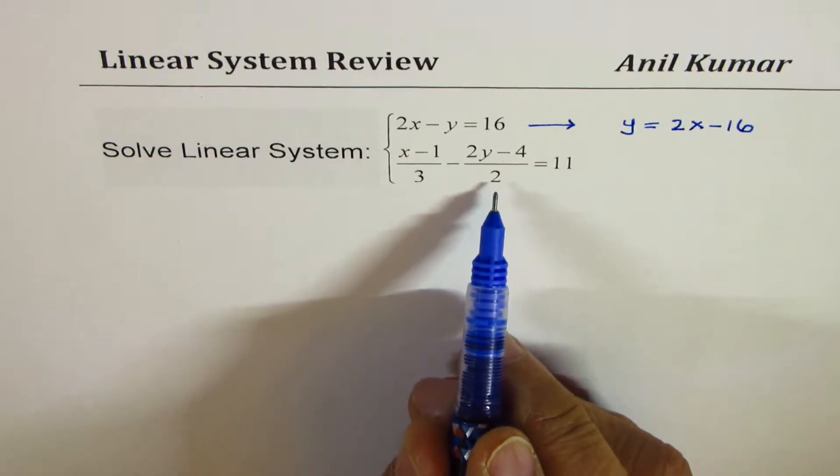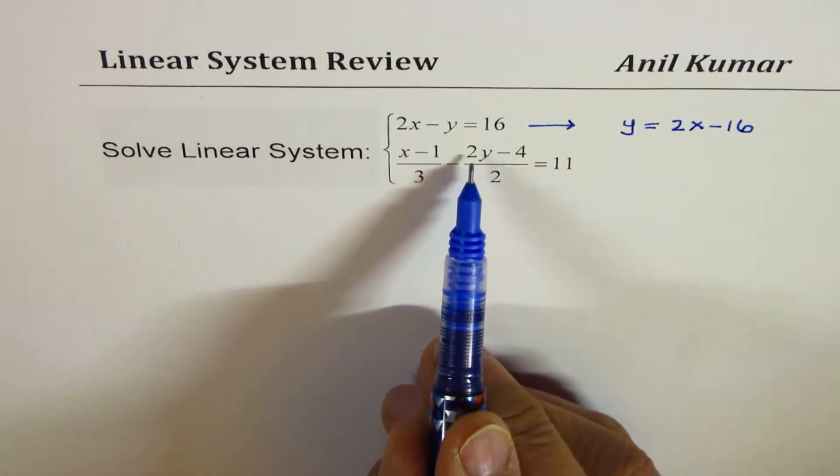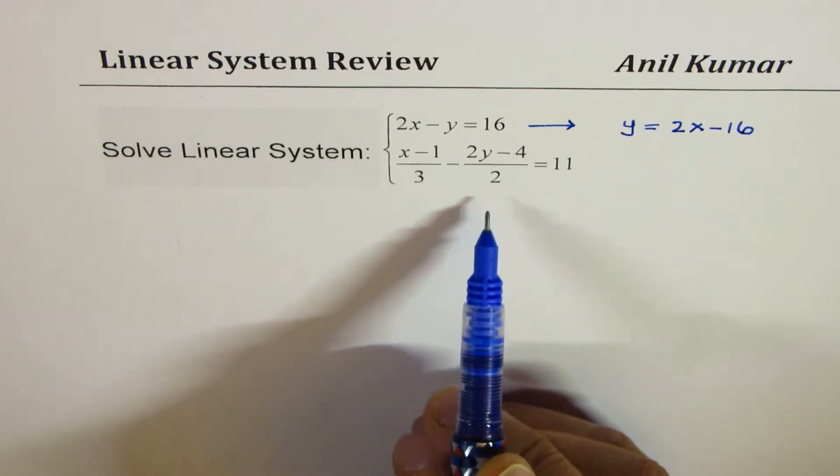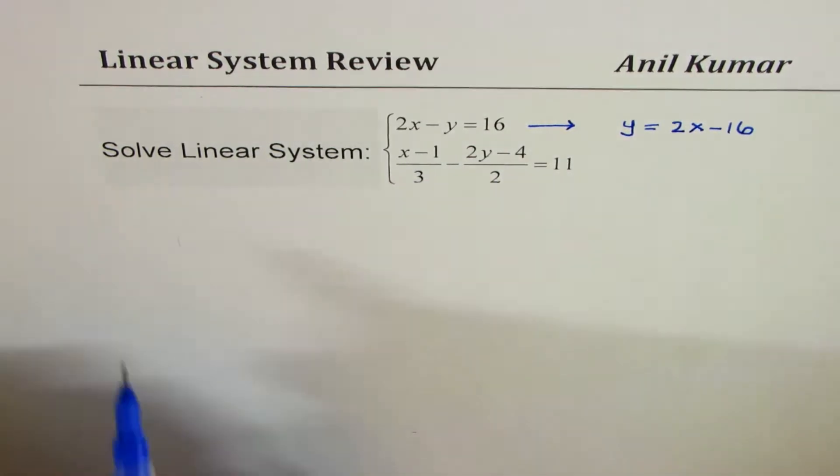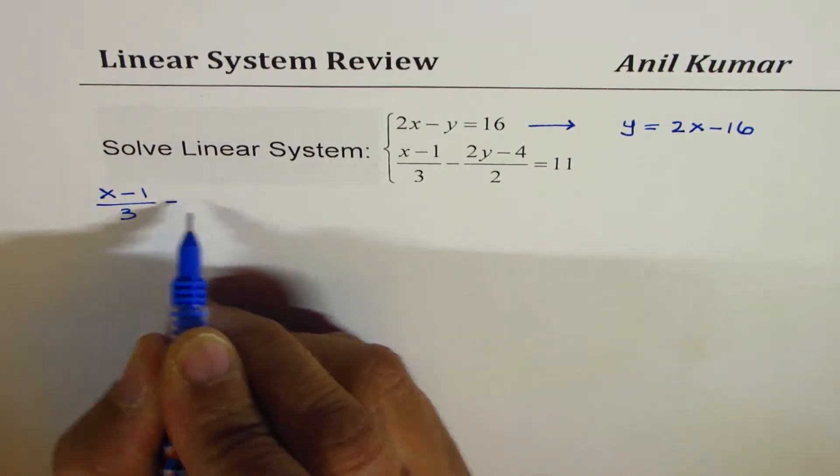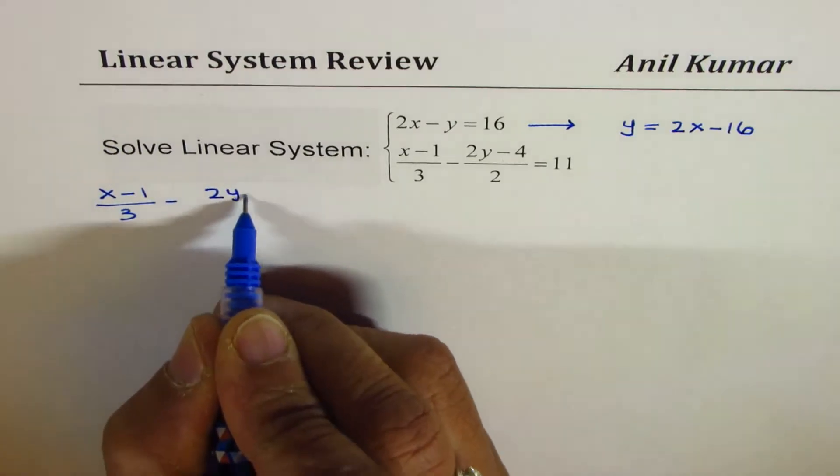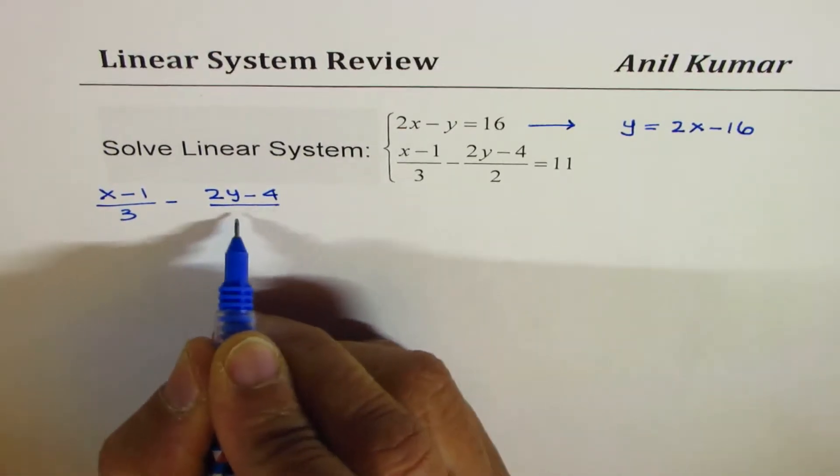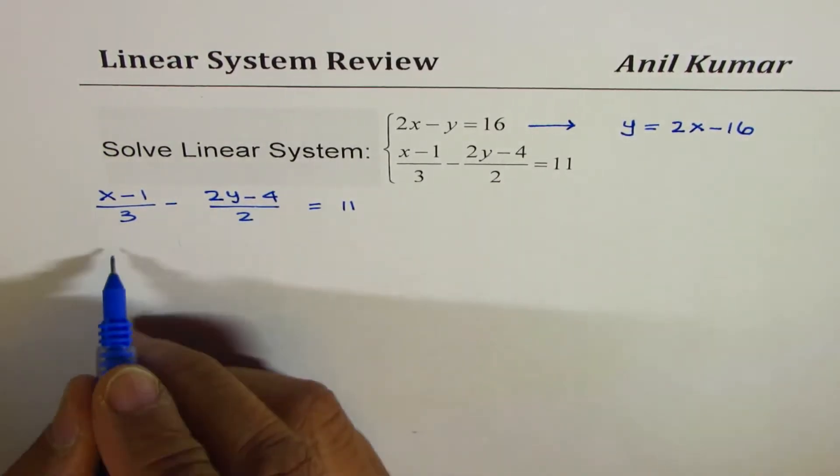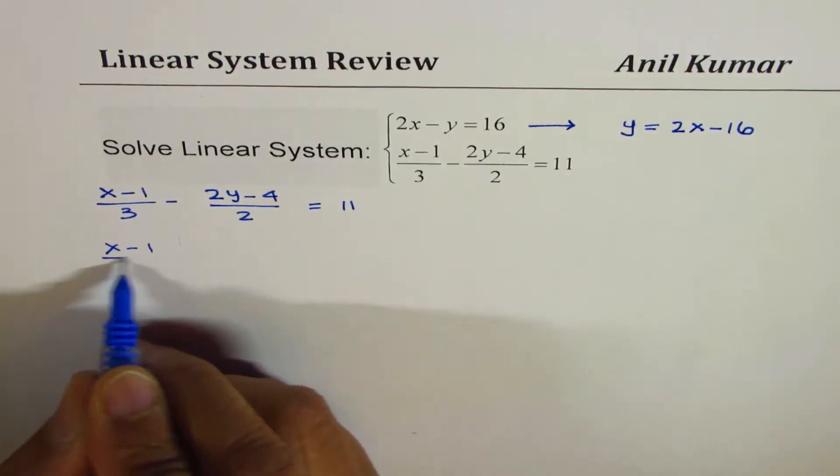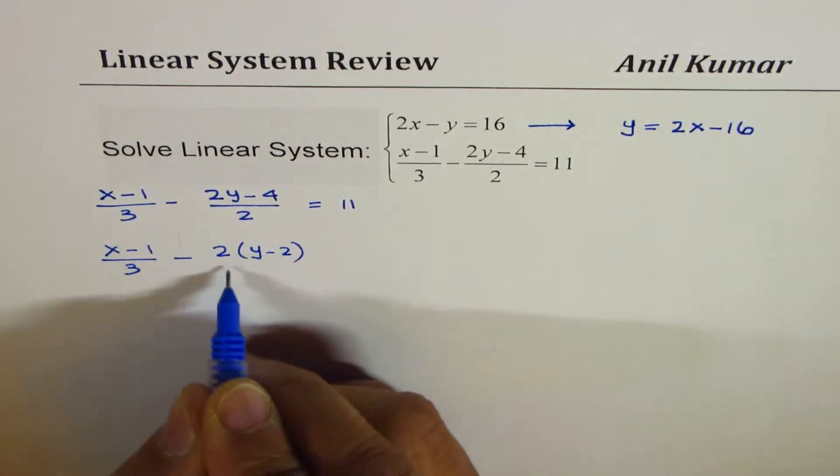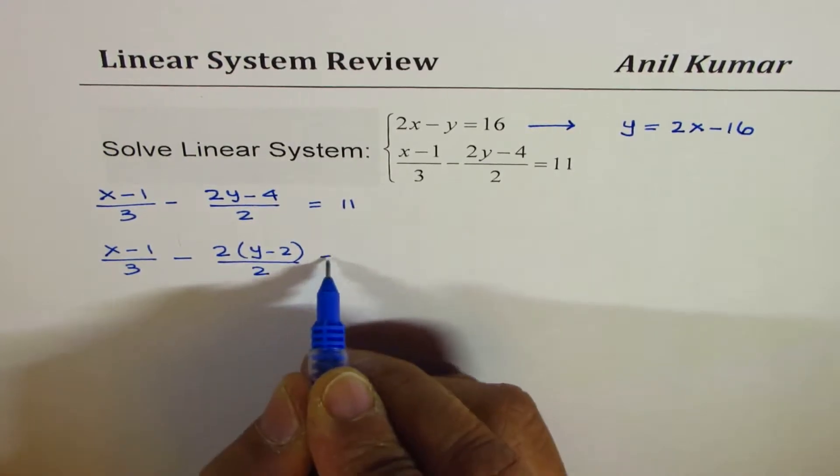In this second equation you will notice that 2 could be taken as a common factor, so that will simplify this equation a bit. So let me start with the second equation. We have x minus 1 over 3 minus 2y minus 4 over 2 equals 11. Now we can factor 2 out that gives us x minus 1 over 3 minus 2 times y minus 2 over 2 equals 11.